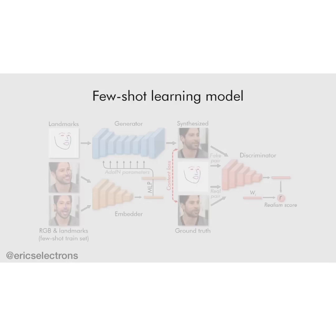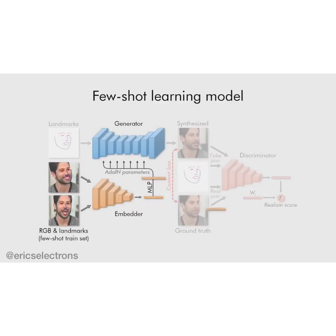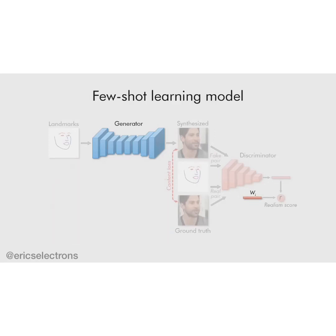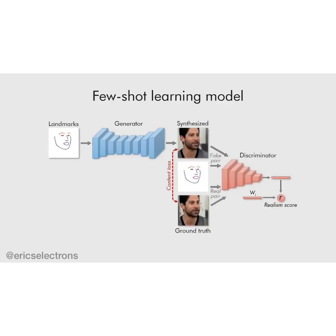Before fine-tuning for a new person, we initialize the adaptive parameters of the generator and the video embedding inside the discriminator using the output of the embedder network. After that, we train the generator and the discriminator on the available few images using the same adversarial objective as in the meta-learning stage.